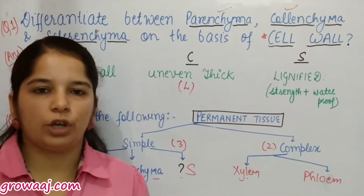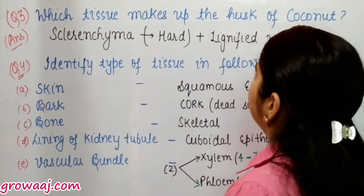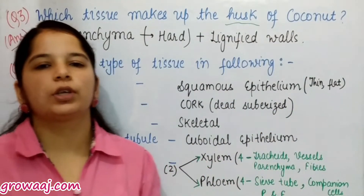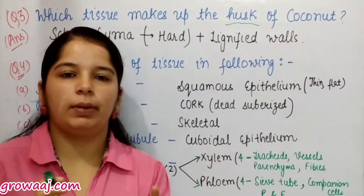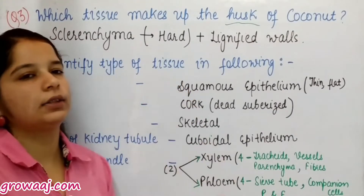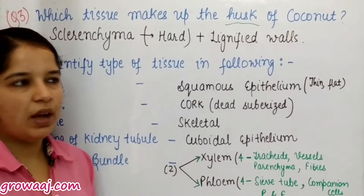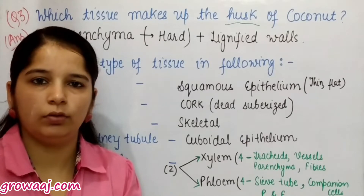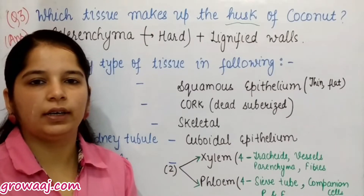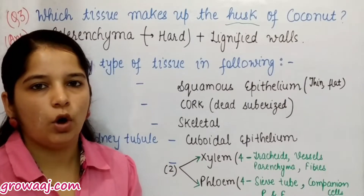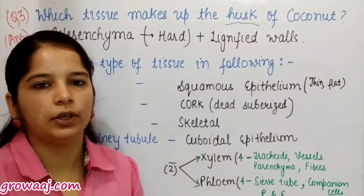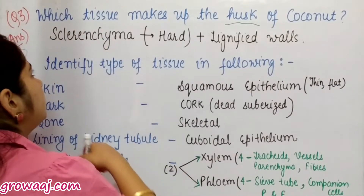Question number three: which tissue makes up the husk of coconut? The husk is the outer brown hairy, hard structure of the coconut. Since it is hard, sclerenchyma tissue is responsible, because sclerenchyma has thick cell walls due to lignin, which provides strength and makes the structure waterproof — that's why water doesn't reach inside the coconut. Answer: sclerenchyma, because of hard and lignified walls.